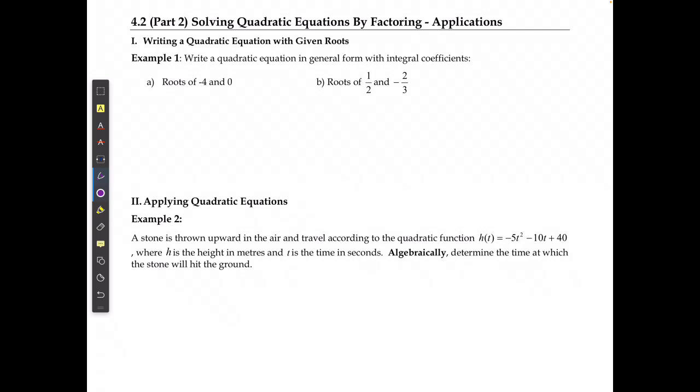For the first part, it wants us to write a quadratic equation in general form with integer coefficients, which means that I can't leave them in fractions. If it says that my roots are negative 4 and 0, the first thing I'm going to write is that means that one of the equations would be that x is equal to negative 4,